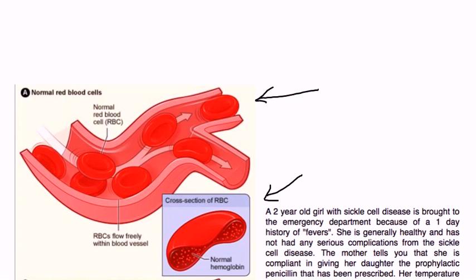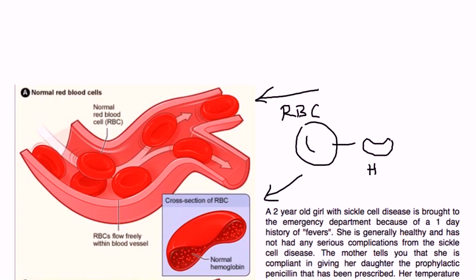These red blood cells travel through the blood vessels to provide oxygen to various parts of your body, various tissues. Oxygen is what sits inside the hemoglobin. So that's the order of events: you've got the red blood cell, and inside the red blood cell you have a hemoglobin molecule, and then on each hemoglobin molecule are four oxygen molecules.